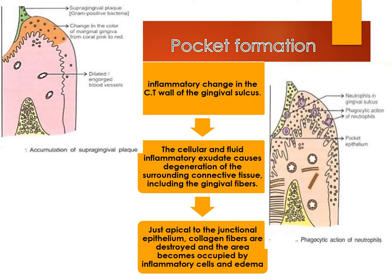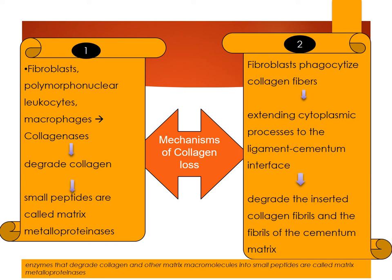Mechanism of collagen loss: there are two mechanisms. First, fibroblasts, polymorphonuclear leukocytes, and macrophages provide enzymes — collagenase — that degrade collagen and other matrix macromolecules into small peptides; these enzymes are called matrix metalloproteinases. Second, fibroblasts phagocytose the collagen fibers by extending cytoplasmic processes into the ligament interface, thereby degrading the collagen fibers and the fibers of the cementum matrix.